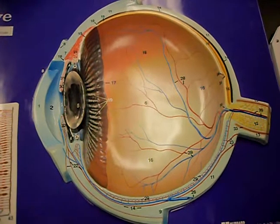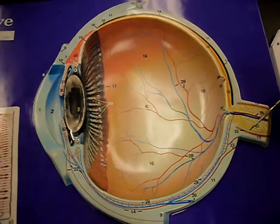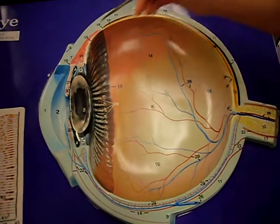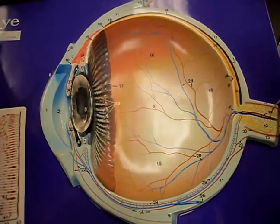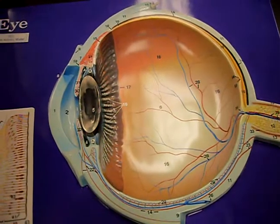There are three layers of the eye. You have the fibrous tunic, the outermost. Then you have the vascular tunic, which is the second one. And then you have the sensory tunic, also called the retina.